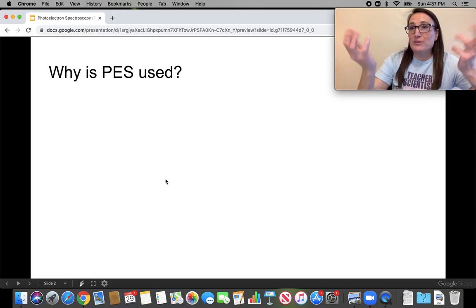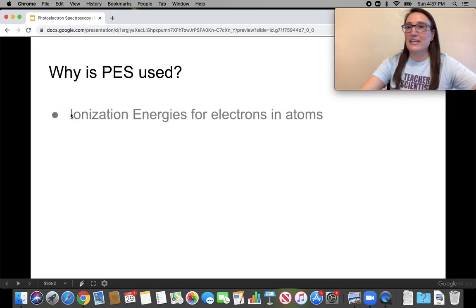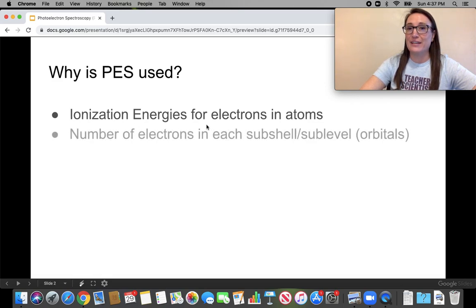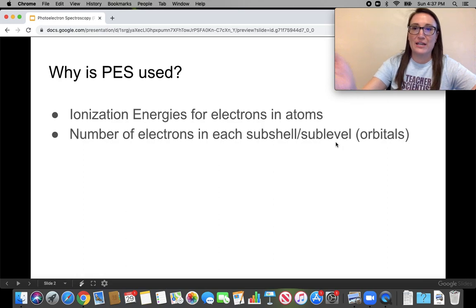So first, why do we use PES? First, it gives us quantitative ionization energy data for any electron in an atom. Next, it tells us the number of electrons in each sub-level or sub-shell, meaning the 1s, 2s, 2p, 3s, etc.